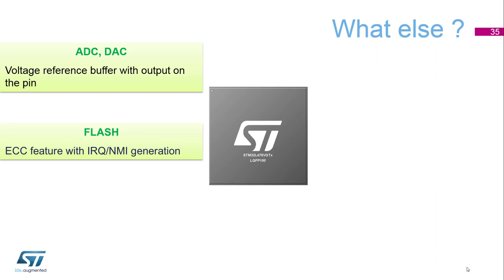The flash interface is 64-bit wide. On top, 8 bits are added for an error checking and correction mechanism. The ECC can correct one mistake with an interrupt generated, or detect two mistakes with a non-maskable interrupt available.